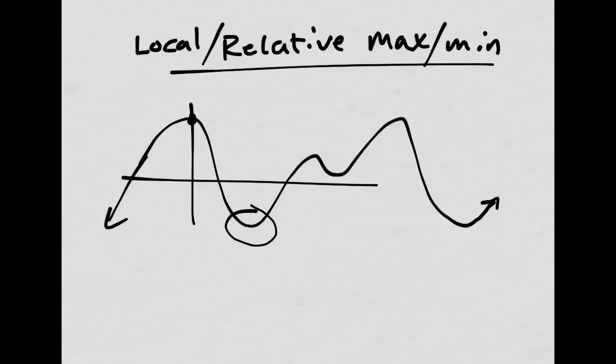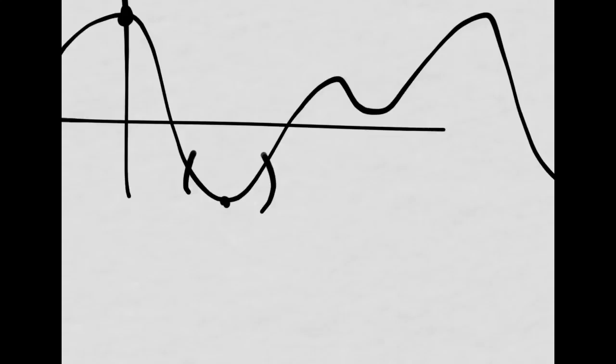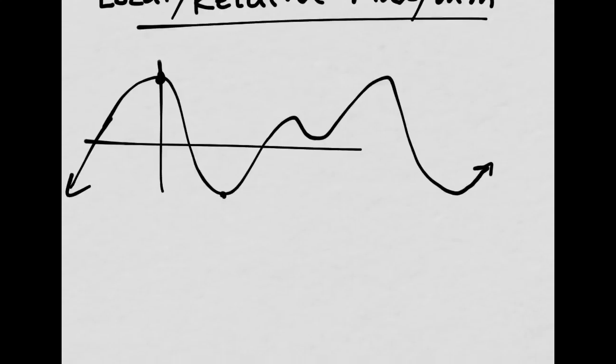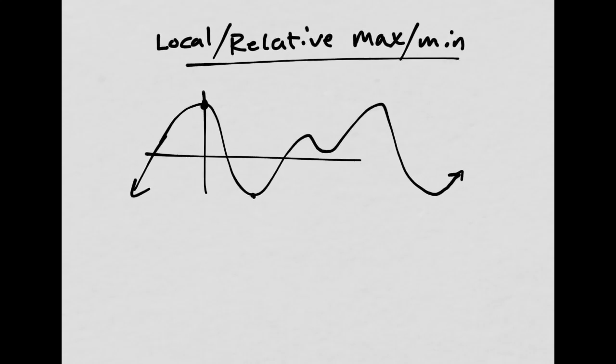And then I would have a local minimum here because I can zoom in and this is the lowest point. So it's a local minimum. And then local maximum, local minimum, local maximum, local minimum. No global maximums or absolute maximums or minimums, just because this goes on and on downwards and on and on upwards.